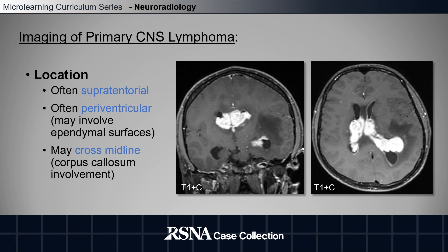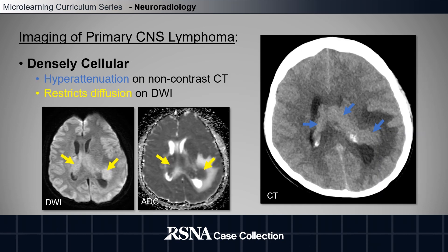Some of the typical imaging features of primary CNS lymphoma include the location, often supratentorial and periventricular. These masses can cross midline and involve the corpus callosum, as with this example showing these enhancing masses in the brain. These tumors are densely cellular and therefore will be hyperattenuating on non-contrast CT and will restrict diffusion on diffusion-weighted imaging, as we can see in these images.